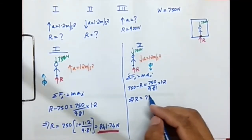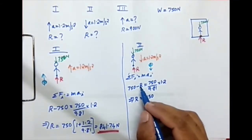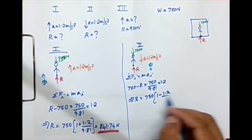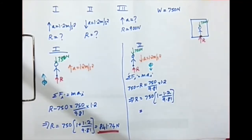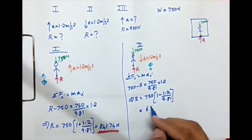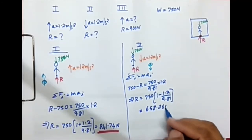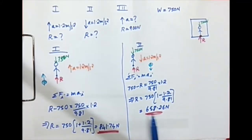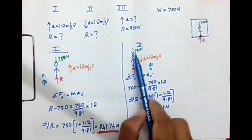Solving for R: R = 750 × (1 − 1.2/9.81), which gives R = 658.26 N. The man weighs 750 N but exerts only 658 N on the floor when the lift accelerates downward — less than his own weight, compared to more than his weight when the lift accelerated upward.